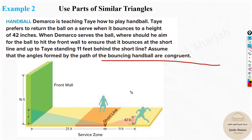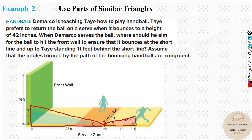In the figure, Thai is bouncing the ball to 42 inches height from the short line. The ball bounces at the short line and goes over to him. We need to find x - the distance along the wall. The key detail from the question is that the bouncing angles are congruent, meaning the two triangles formed by the ball's path are similar. One triangle has base 25 and the other has base 11, and x is unknown. Both triangles also have 90° angles.